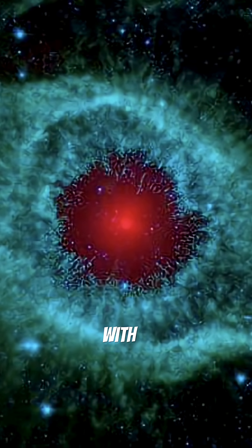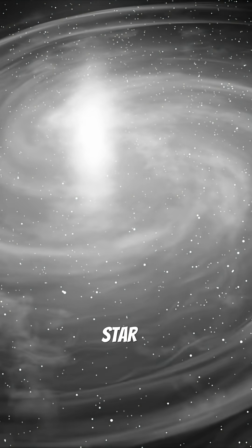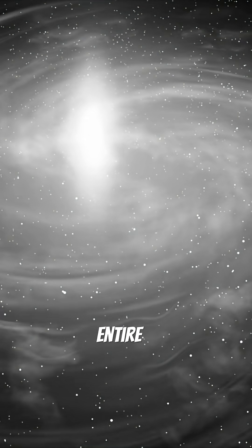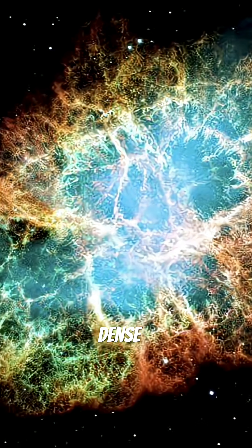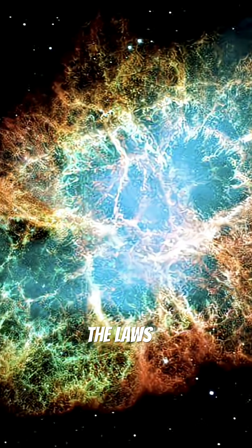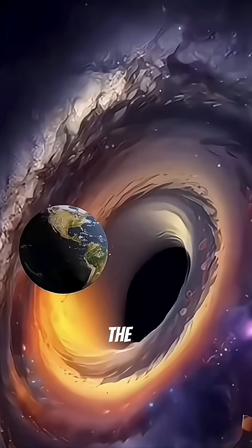A black hole begins with death. The death of a star. When a giant star collapses, its entire mass is crushed into a single point. A place so dense, so heavy, that the laws of physics break. This point is called the singularity.